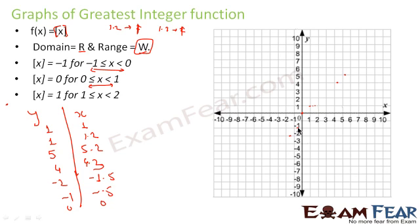For any value of x from 0 to 1, the answer is 0. Similarly, for 1 to 2 the value is 1; 2 to 3 is 2; 3 to 4 is 3; 4 to 5 is 4; 5 to 6 is 5; 6 to 7 is 6. For negatives: 0 to minus 1 gives minus 1; minus 1 to minus 2 gives minus 2; minus 2 to minus 3 gives minus 3.